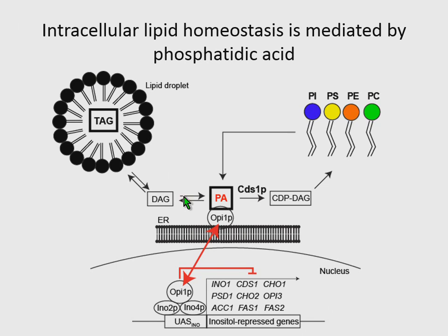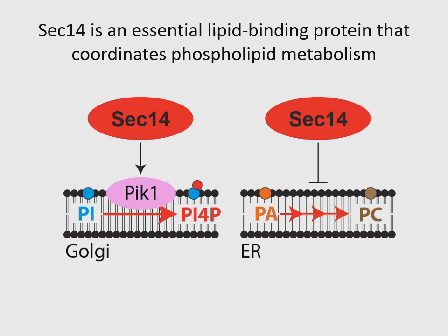We were initially interested in the role of this lipid remodeling protein called SEC14. SEC14 is a very interesting protein — it's an essential as well as highly conserved lipid-binding protein. Its biological function is to create a lipid environment at the Golgi which promotes vesicle trafficking events. It does this by promoting kinases such as PIK1 to produce PI4-phosphate, as well as inhibiting the CDP-choline pathway and restricting the utilization of phosphatidic acid.